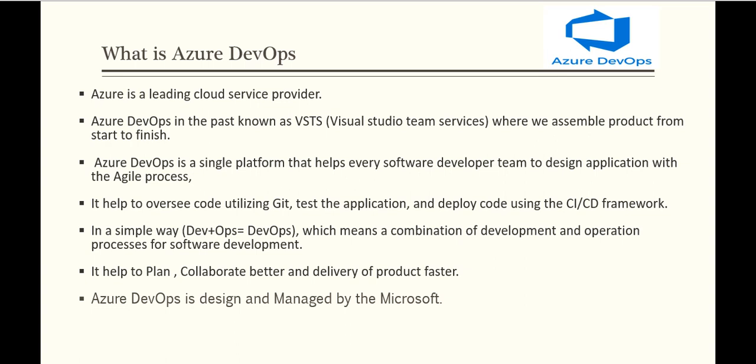Azure DevOps is a single platform that helps every software developer team design applications using the agile process. It helps us to oversee code using Git, test the application, and deploy code using the CI/CD framework. The biggest advantage is that development teams and operations teams work together, filling the gap that exists in the agile process — helping teams plan, collaborate better, and deliver products faster.